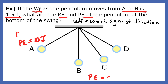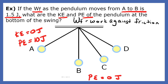Now let's look at a pendulum with friction. If the work against friction as the pendulum moves from A to B is 1.5 joules, what are the kinetic and potential energies of the pendulum at the bottom of its swing? The kinetic energy at the bottom of the swing is 8.5 joules, and the potential energy is 0. It's 8.5 joules because 10 joules minus 1.5 is 8.5.